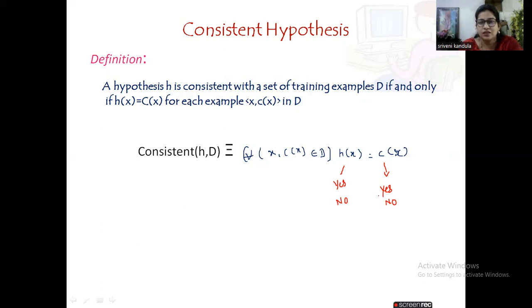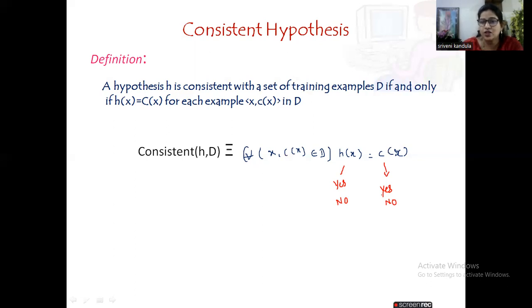Suppose two friends are reporting about one incident. If both of them report the incident the same way, we say both are consistent with each other, and we can trust that report. Otherwise we might be in a dilemma. Everything must be consistent. If the hypothesis says yes, the target concept should also be yes — the hypothesis should agree with the target concept.